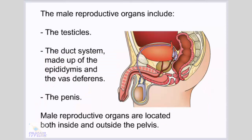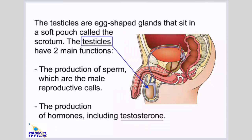The male reproductive organs include the testicles, the duct system made up of the epididymis and the vas deferens, and the penis. Male reproductive organs are located both inside and outside the pelvis. The testicles are egg-shaped glands that sit in a soft pouch called the scrotum. The testicles have two main functions: the production of sperm, which are the male reproductive cells, and the production of hormones, including testosterone.